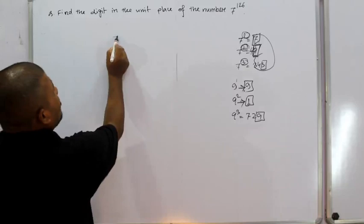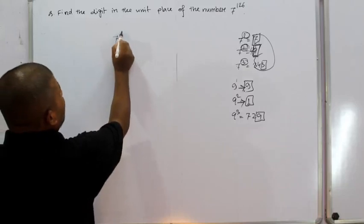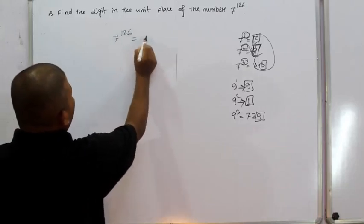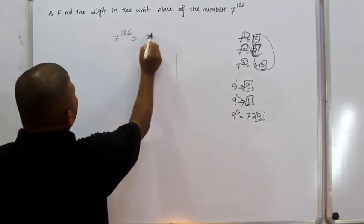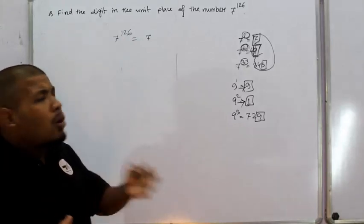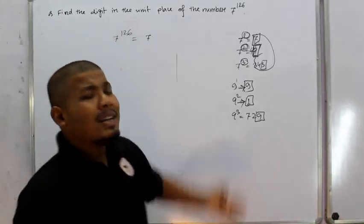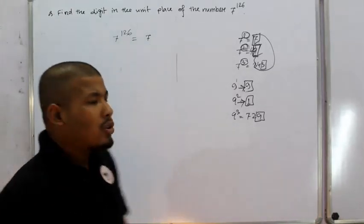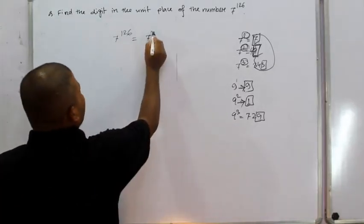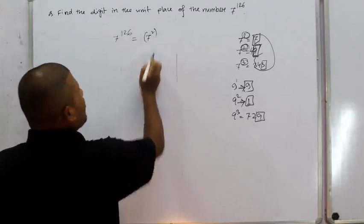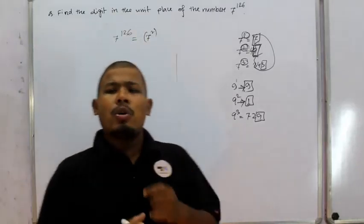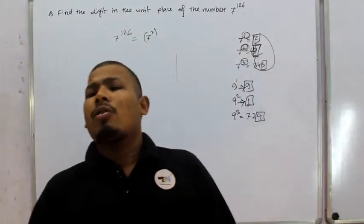First of all, 7 to the power of 126 can be written as 49 to the power of 63, since 7 squared is 49.